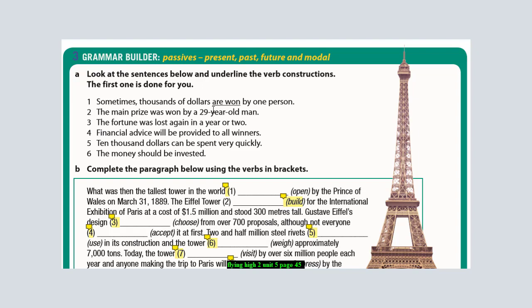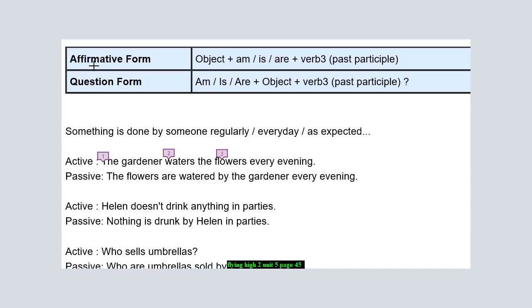Number one: sometimes thousands of dollars are won by one person. Focus here on 'are' and look at the verb 'won' - as we all know, 'won' is the third inflection of the verb. For the affirmative form, we first use the object, then am/is/are. We should all know when you're talking about yourself you should use 'am', when talking about somebody else like he, she, or it in the singular form we use 'is', 'are' for the plural. Last thing we add verb three, which is known as the past participle.